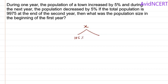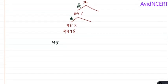And during the next year, the population decreased by 5%. So next year, it becomes 100 minus 5% which is 95%. Now the total population is 9975. So 95% of 105% of X equals 9975.